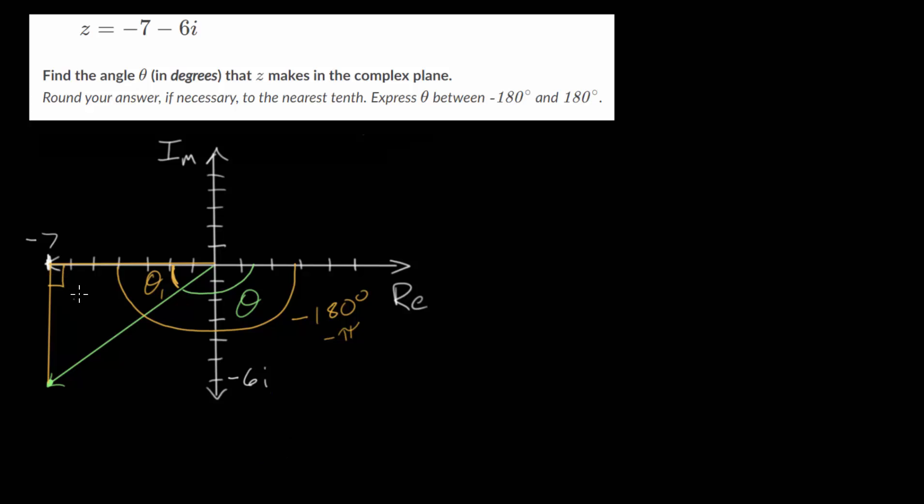Since this is a right triangle, we know this length here is just the imaginary component, and we're talking about the length, so essentially the absolute value of this, which would be 6. And likewise, the length of the horizontal component would be the absolute value of its real part, which is 7.